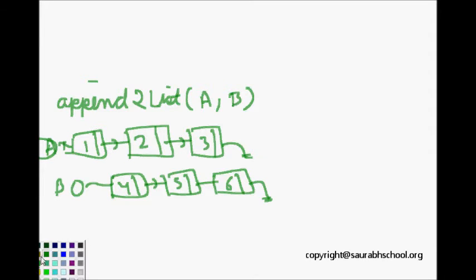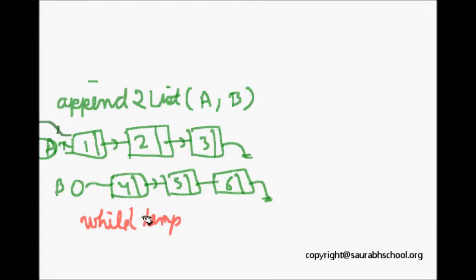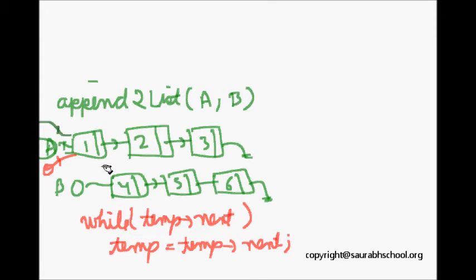So how we would append? What we do is that we will make a temporary pointer here, this temp. And now what we will do: while temp next is not equal to null, we will do temp is equal to temp next. So what this will do is we will be here first, so temp next is not equal to null.